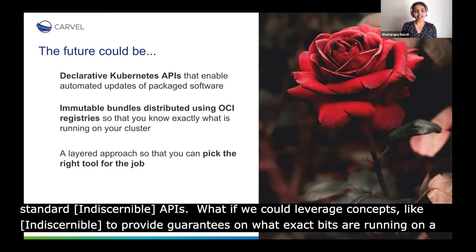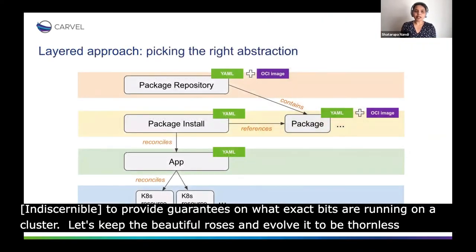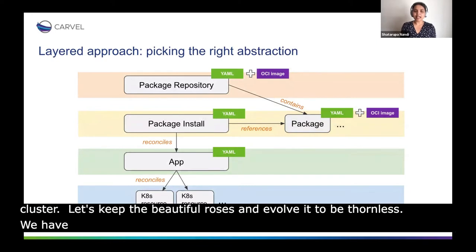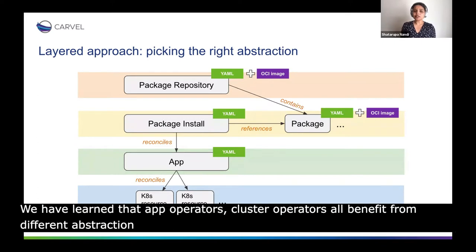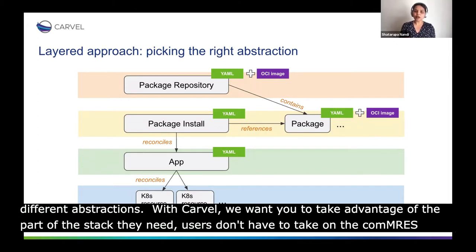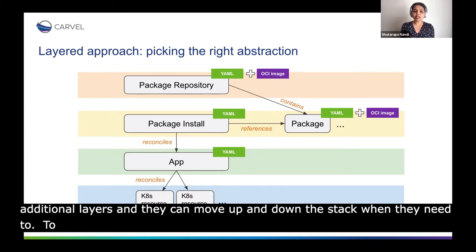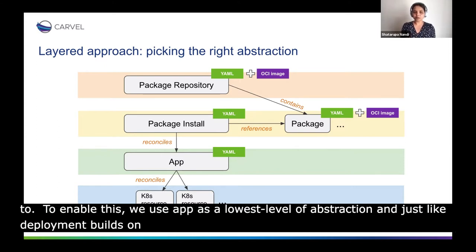Let's keep the beautiful roses and evolve it to be thornless. We have learned that app operators, cluster operators, developers, and package authors all benefit from different abstractions. With Carvel, we want users to take advantage of the part of the stack they need. Users don't have to take on the complexity introduced by additional layers and can easily move up and down the stack when needed. To enable this, we use App as the lowest level abstraction, similar to a pod. Just like deployment builds on top of pod, a package and package install build on top of app. A package repository builds on top of packages.